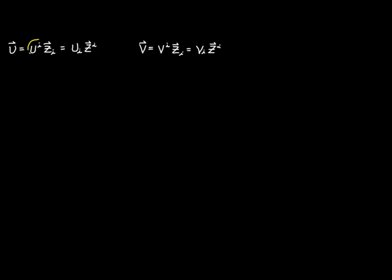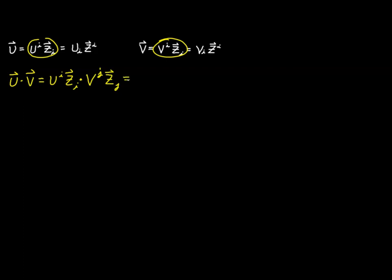We'll start by using the covariant linear combinations together. Our dot product u dot v would have the first expression u^i z_i. We'll dot that with the second expression, and since I've used i as a dummy index in the first term, I need a new letter: v^j z_j.